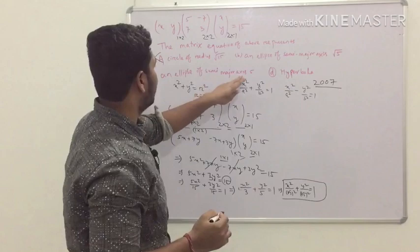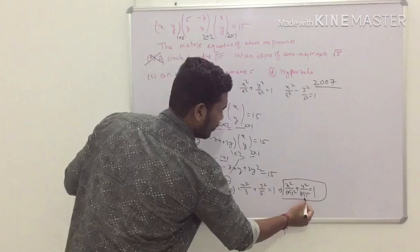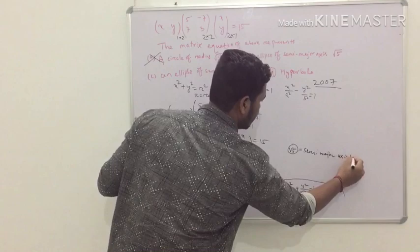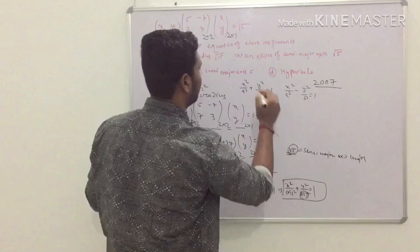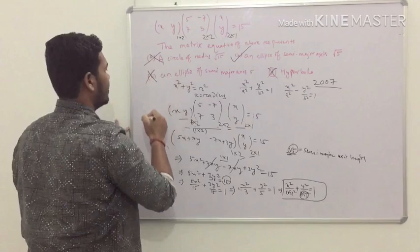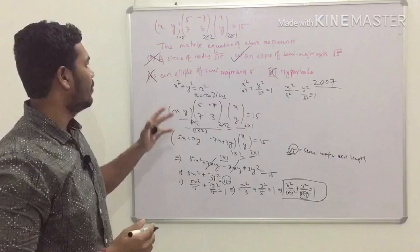Now choose the correct option. Option A (circle) is not correct. For an ellipse, the semi-major axis is always greater than the semi-minor axis. Here √5 > √3, so the semi-major axis is √5. Therefore Option B — an ellipse of semi-major axis √5 — is correct. Option C (semi-major axis 5) and Option D (hyperbola) are both incorrect. If this video was helpful, please share it with your friends and subscribe to the channel. Thank you!